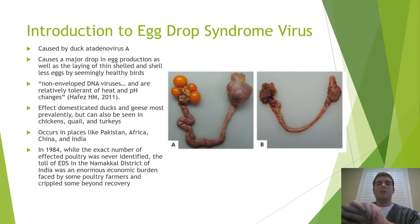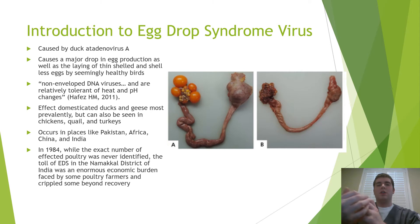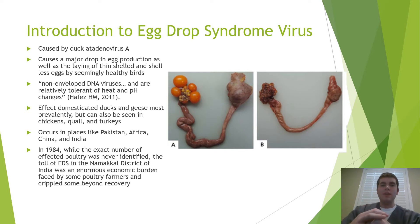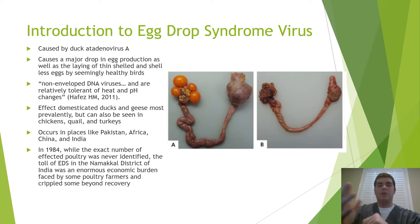Fortunately, egg drop syndrome virus doesn't occur in the U.S. very often, although there are several instances that have been recorded. Its primary areas of occurrence are in places such as Africa, China, Pakistan, and most notably India. Back in 1984, in the Macal district of India, where the full number of poultry affected was never known or recorded, egg drop syndrome swept through the district and affected the egg production rate of every bird that was affectable by it, which crippled many poultry farmers in the district beyond recovery.